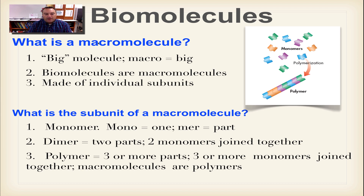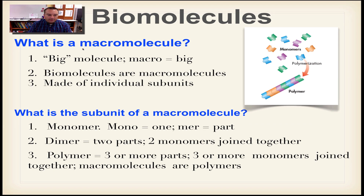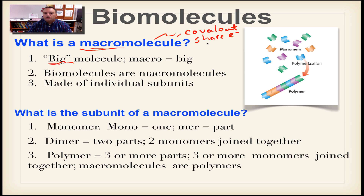This chapter is about macromolecules. Macromolecules are big molecules — the word 'macro' just means big. A molecule is anything that has a covalent bond in it. In a covalent bond, atoms share electrons, making it a very strong bond. Biomolecules are all macromolecules — big molecules involved in living things.